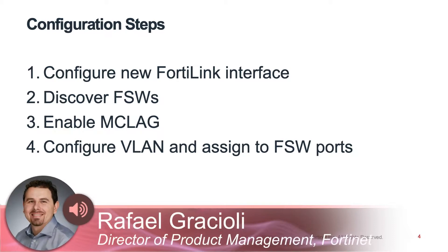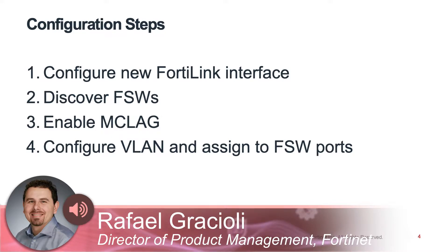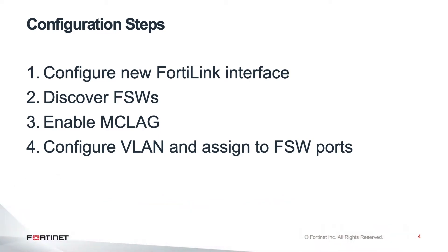This is done in four quick steps: configure new FortiLink interface, discover FortiSwitches, enable MCLAG, and finally configure the WAN VLAN and assign to FortiSwitch ports.